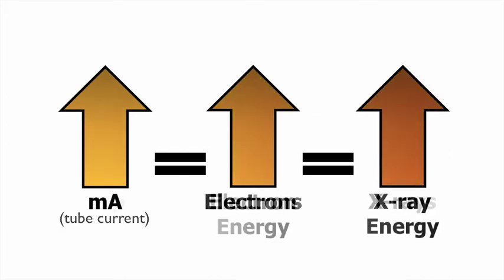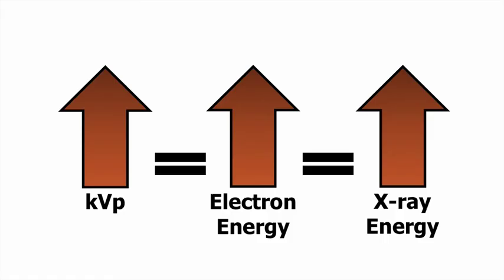The effect of KVP is slightly different. Increasing KVP, which is the tube potential, increases the energy of the electrons in the x-ray tube, and increasing the electron energy actually results in increased x-ray energy. So that makes sense.